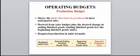The production budget shows the units that must be produced to meet the anticipated sales. Management will want a certain percentage kept in ending inventory at the end of each month or quarter to meet next quarter's sales — a buffer in inventory in case sales are high or low. Required production units equal budgeted sales in units plus desired ending inventory minus beginning inventory.